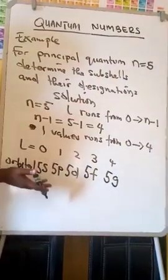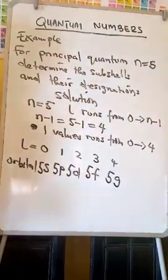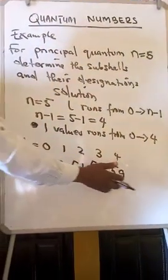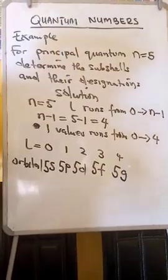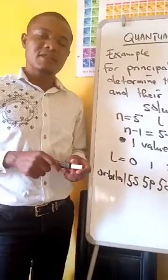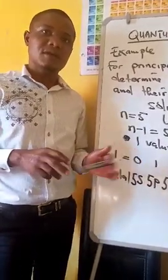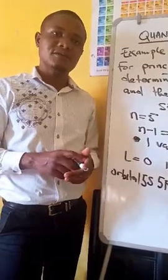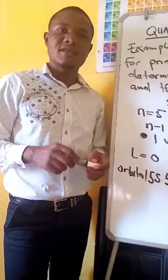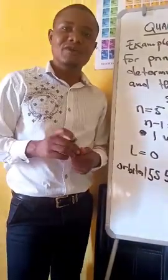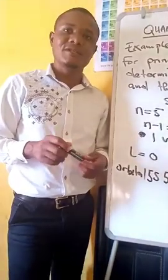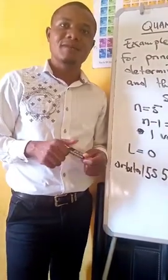So we have the 5s, 5p, 5d, 5f, and 5g subshells. That is how you can calculate the subshells related to a given energy level. L is also known as a subshell. In the next tutorial, we shall look at the magnetic quantum number and the electron spin quantum number, ms.